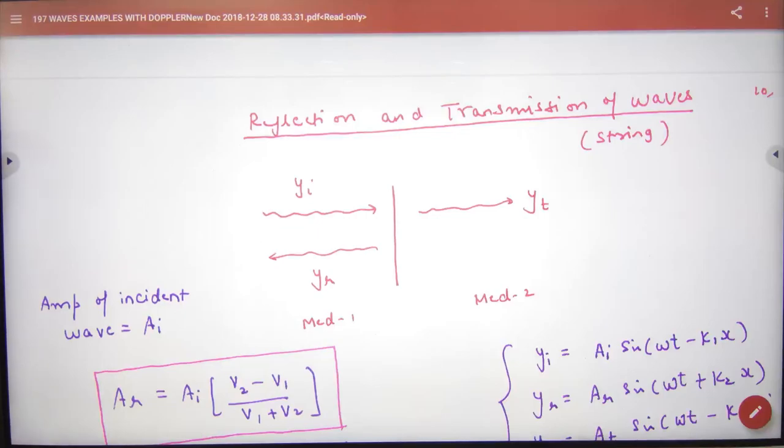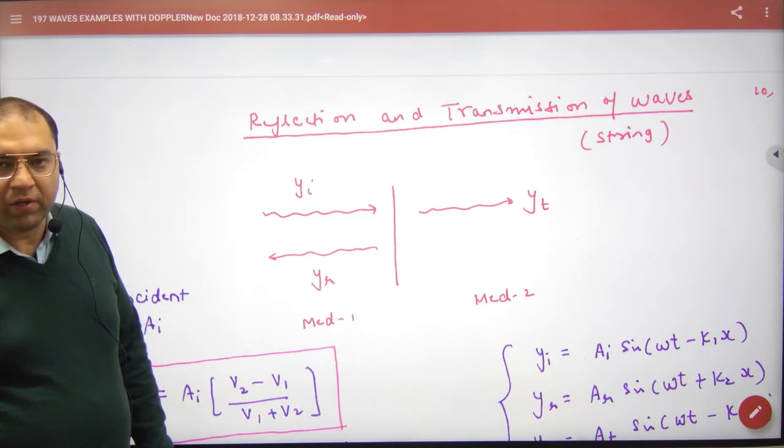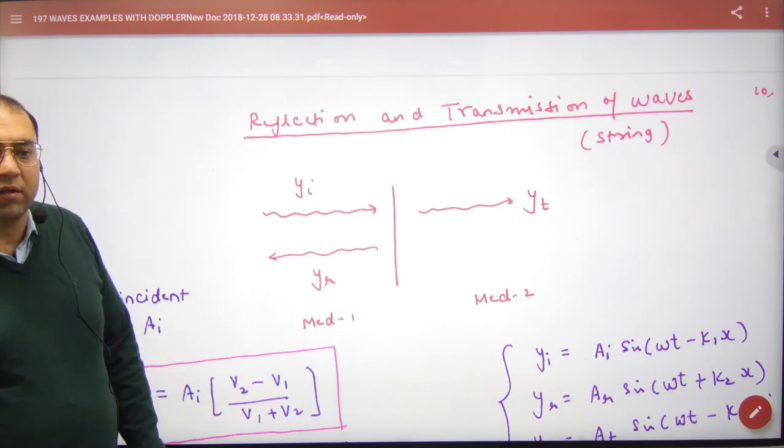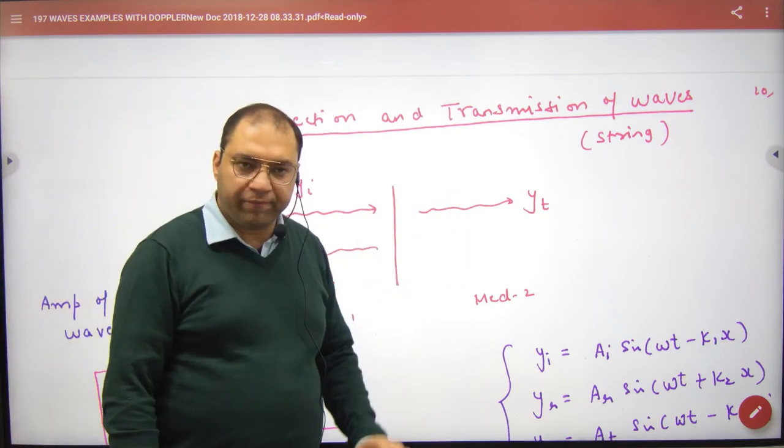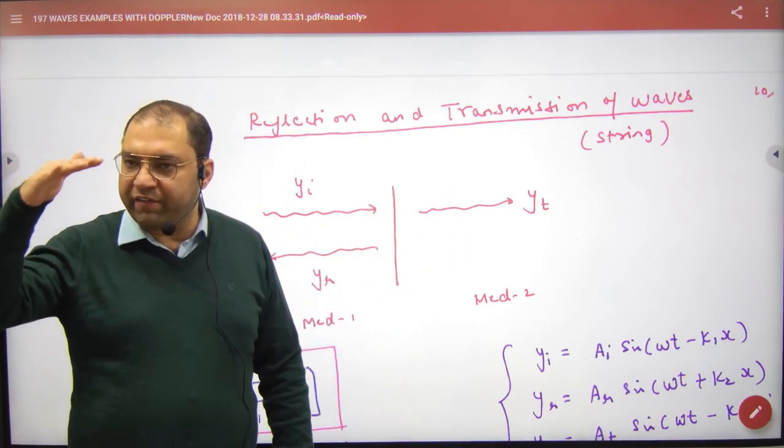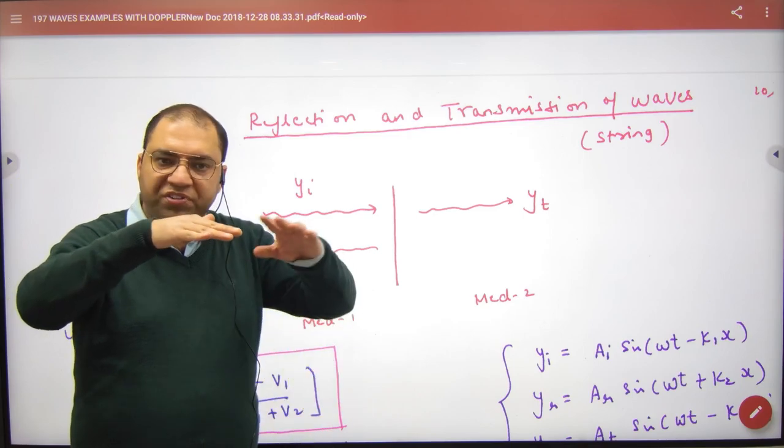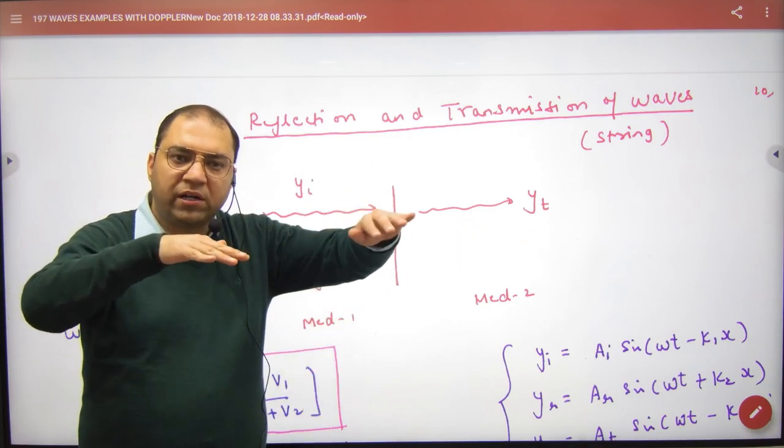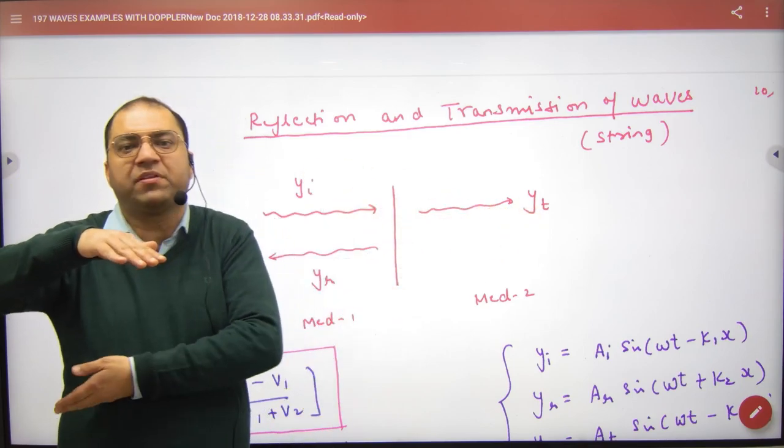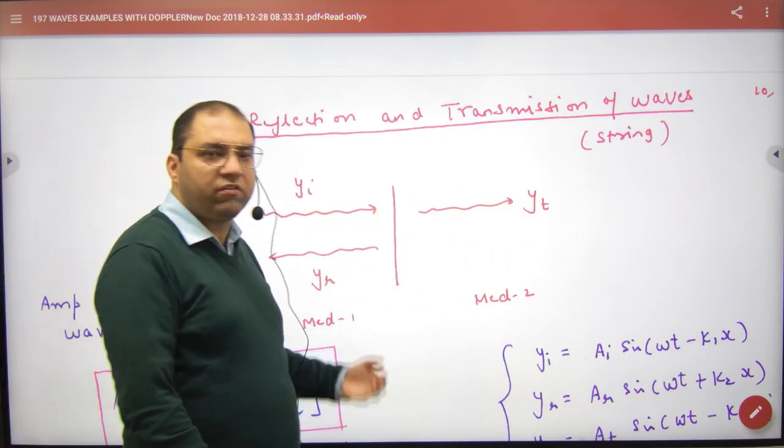In reflection and transmission of waves, we need to remember a formula. Suppose you have two mediums. How can there be two mediums? Like this is air and this is water, so sound, a wave, entering one medium from the other medium. It entered some part and it reflected back.